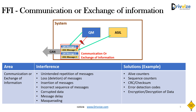FFI related to communication or exchange of information: the communication medium is common for both QM and ASIL components. For example, CAN is common for both QM and ASIL components to send or receive messages. A failure in a QM component can result in ASIL messages getting corrupted, delayed, or provided in the wrong order — this is interference related to communication or exchange of information.